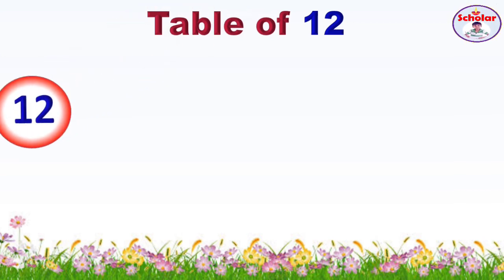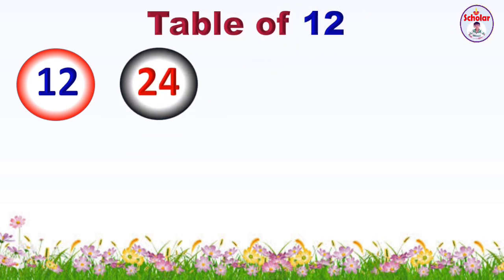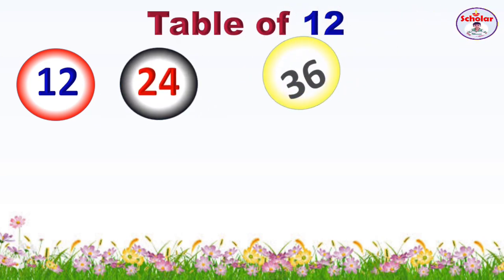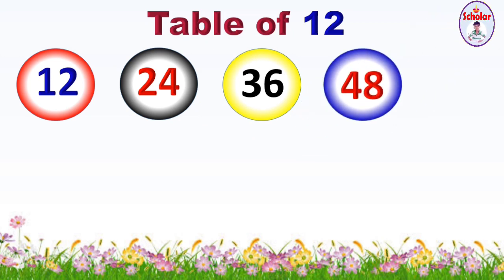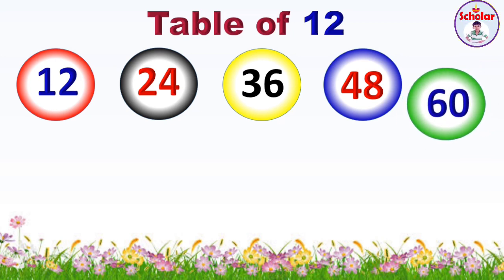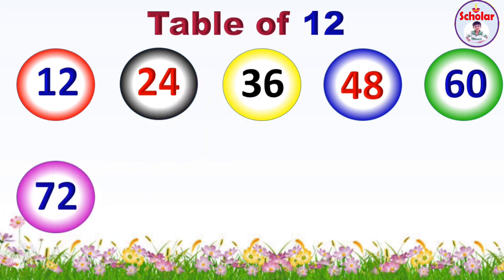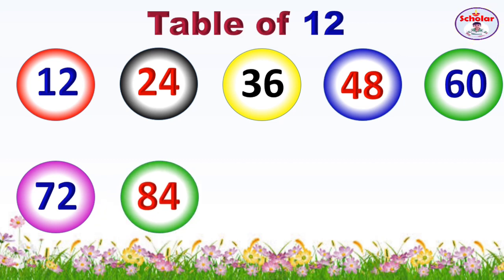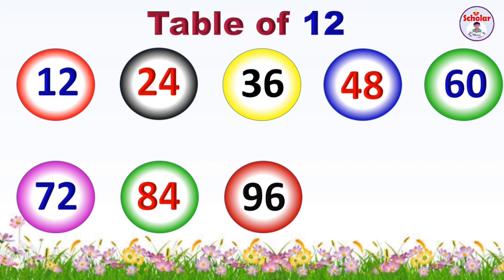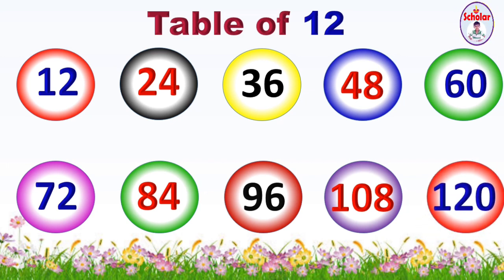Table of 12: 12×1=12, 12×2=24, 12×3=36, 12×4=48, 12×5=60, 12×6=72, 12×7=84, 12×8=96, 12×9=108, 12×10=120.